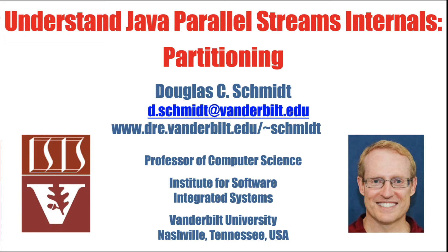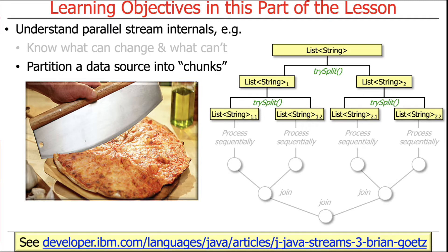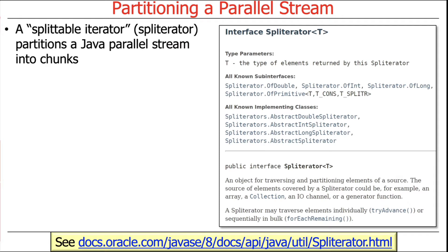We're going to continue our discussion of Java parallel streams, focusing on some interesting aspects related to internals. We'll begin by talking about partitioning in Java parallel streams. You may recall from our discussions of sequential streams that there was this abstraction called a spliterator — a portmanteau for splittable iterator — which is used to partition a Java parallel stream up into chunks.